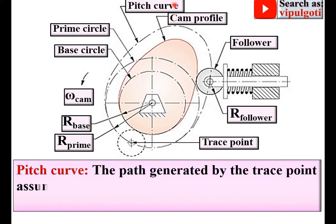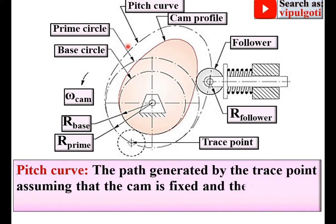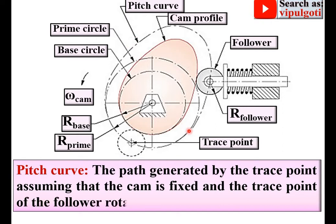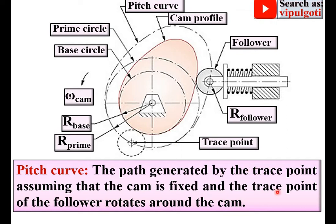Next: pitch curve. The path generated by the trace point is known as the pitch curve. Here you can see this is the trace point, and the path generated by this trace point is known as the pitch curve.